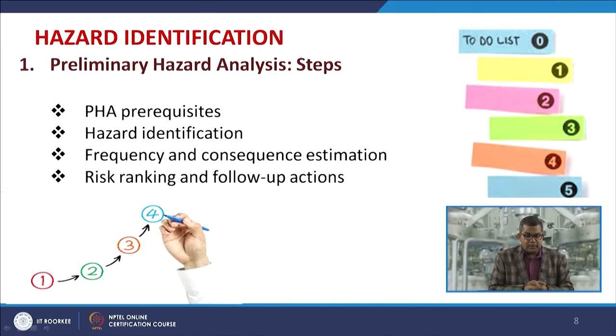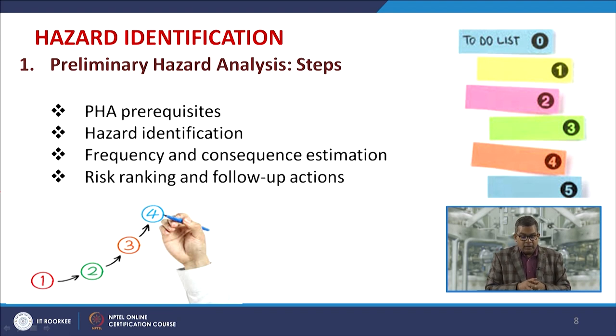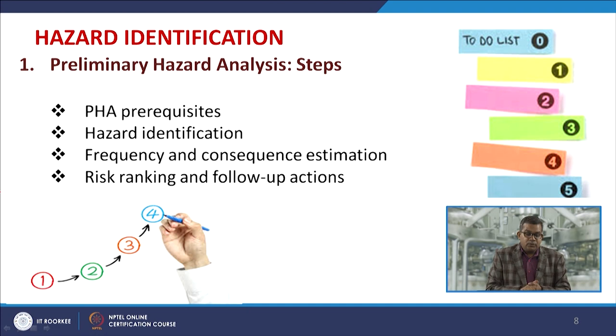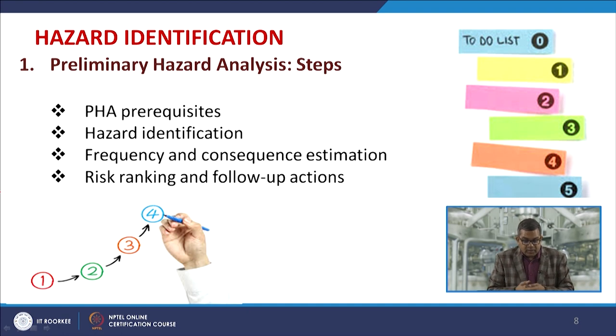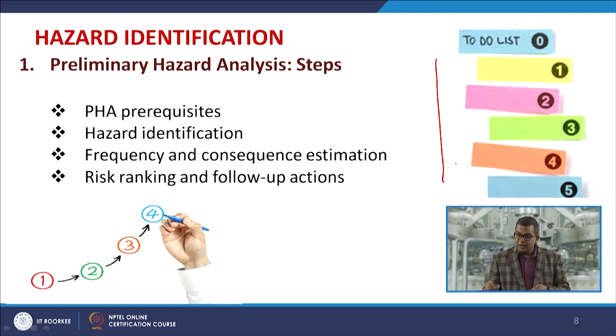There are various steps involved in preliminary hazard analysis. The PHA prerequisites include: having a proper hazard identification list, a frequency and consequences estimation, and a risk ranking and follow-up action plan.